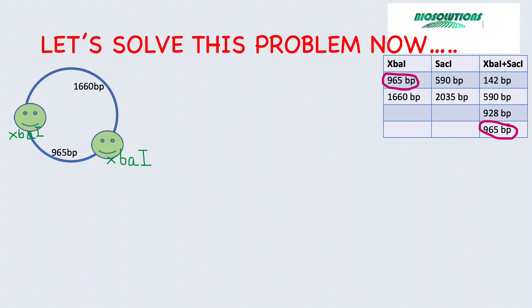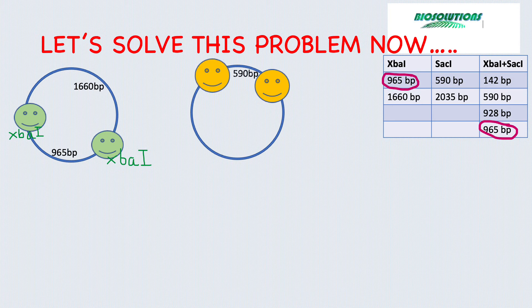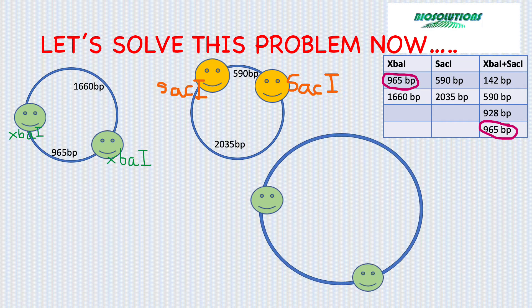Also, we do not have any 3' or 5' direction issues here, hence only one possibility. Now we place SAC1 restriction sites, keeping in mind double digest products too. We observed that the 965 base pair fragment is also present in the double digest. That means between the two XBA1 sites there is no SAC1 site to disturb it. We will try to place SAC1 sites outside of the XBA1 sites, like this.